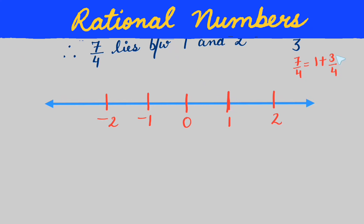One is already marked, and we have to mark 3/4. Three by four means there are four total parts. We mark four equal parts — one, two, three, four — and we need the third part. One, two, three — this third part is the point 1 + 3/4, which is 7/4. Here lies the rational number 7/4.